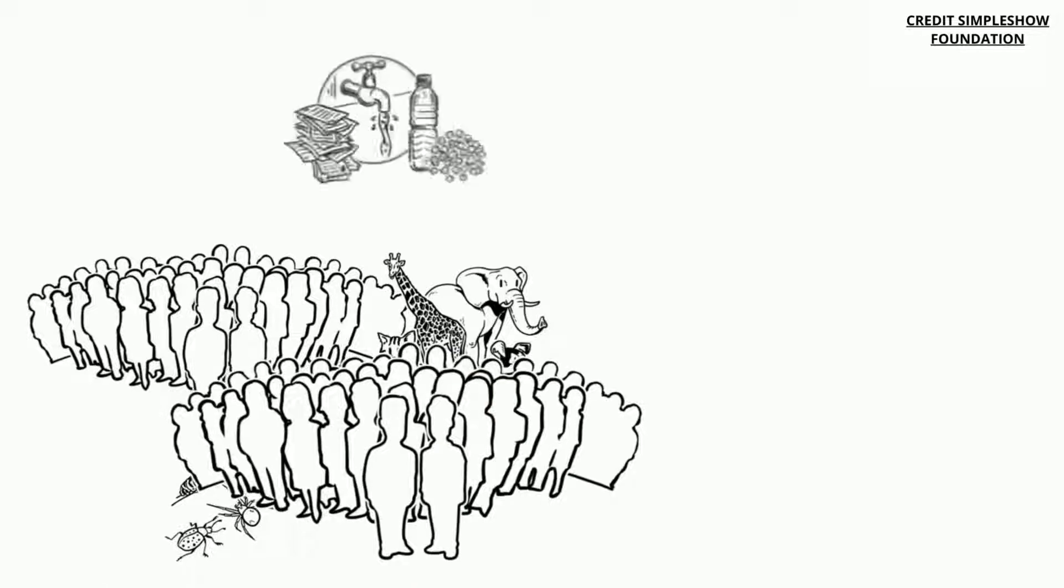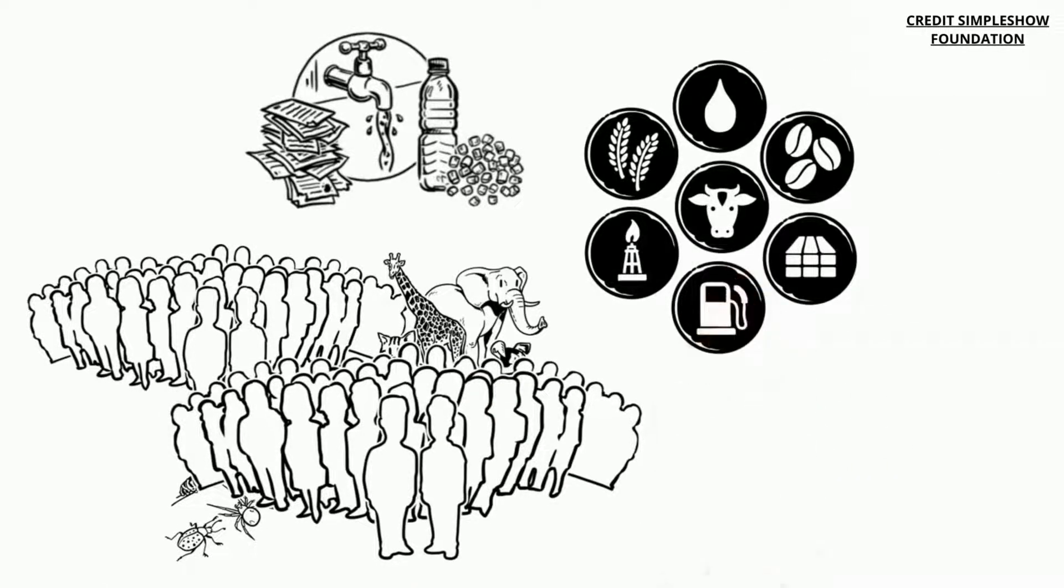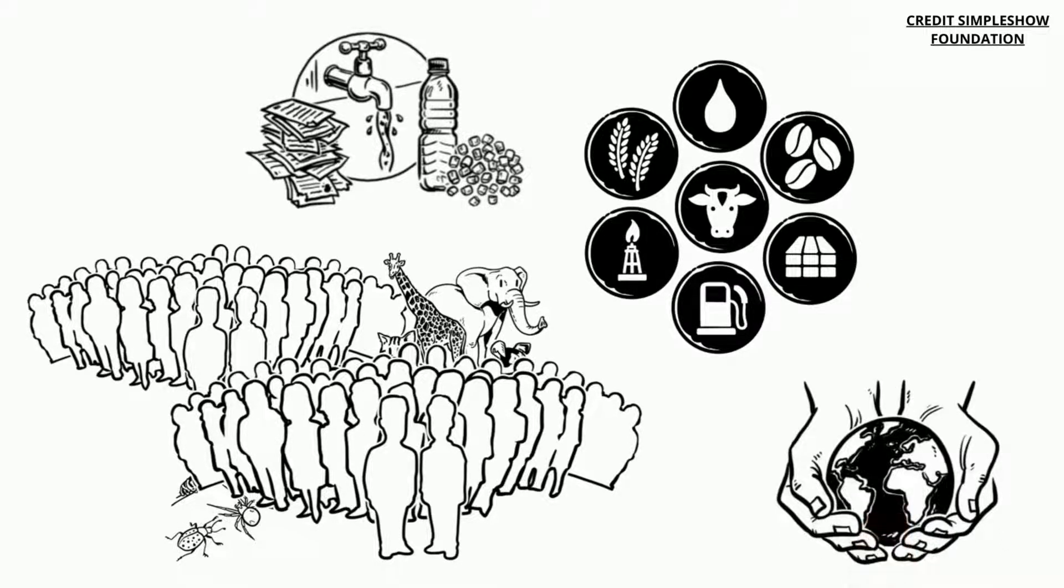Human population growth may suffocate other species. And overconsumption strips our earth of resources needed by other species as well as by humans. Let's take action before it is too late.